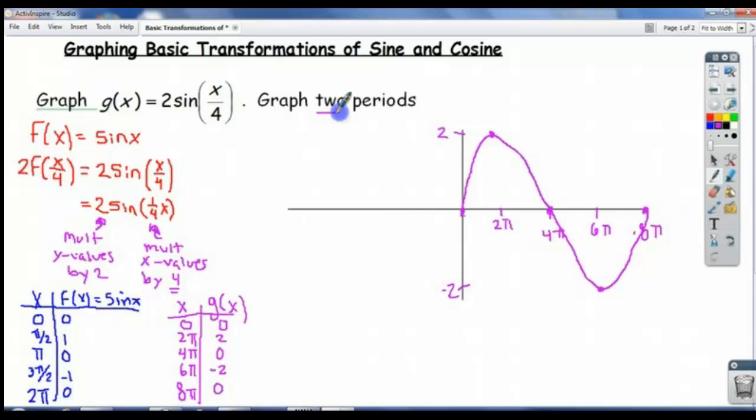There we go. And that's one period. The directions say graph two periods. We can do this, no problem. Because if this length is 8π, then if I go that length in the other direction, that should be negative 8π. If that length is 2π, this length should be negative 2π. That should be negative 4π, and that should be negative 6π. Alright, and since we know the sine shape, we can utilize that fact to get the second period. We don't have to keep resorting to doing it so rigorously if we need just a graph. There it is.